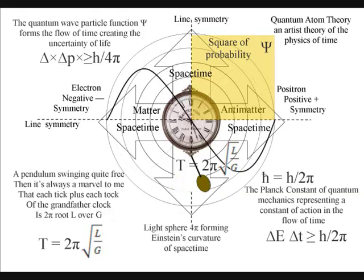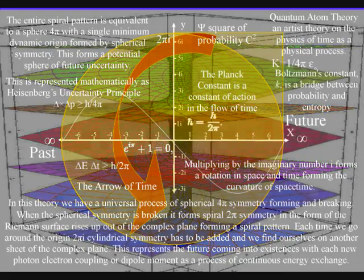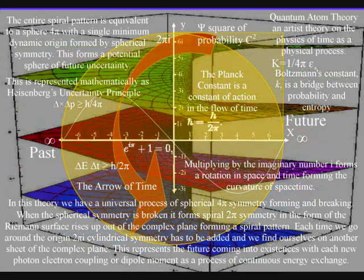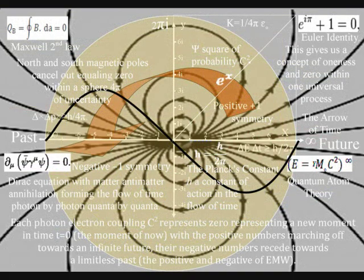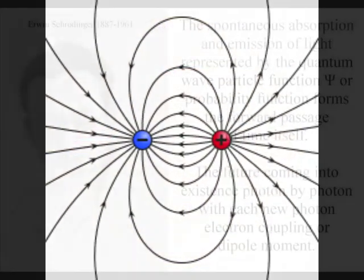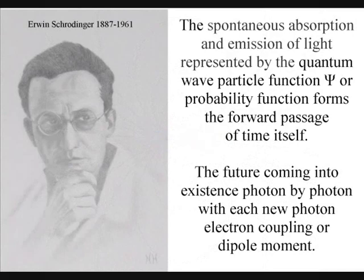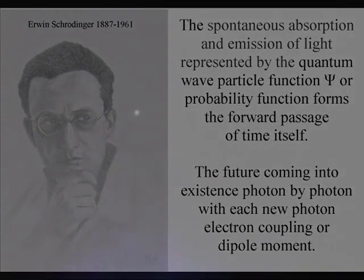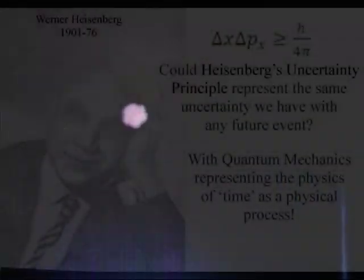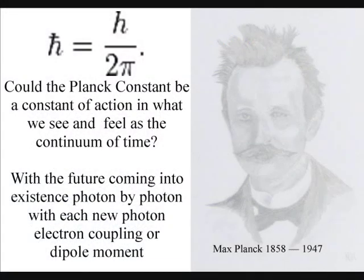Our future is always uncertain because of a continuous interaction or absorption emission of light. The future is unfolding with each new photon-electron coupling or dipole moment, forming the probability function or quantum wave particle function that is explained mathematically by Schrödinger's wave equation. At the smallest level of this process, this uncertainty is seen as Heisenberg's uncertainty principle, with the Planck constant being a constant of action in the dynamics of space and time.